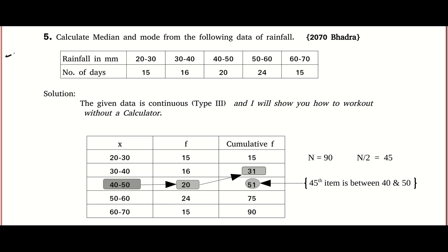The next thing is Type 3. In Type 3, you will be given class intervals — it is called continuous data. The word 'continuous' comes because the first and second intervals are connected by the same number, and so on. If the data is not continuous, you have to forcefully make it continuous by adding a correction factor. For Type 3, our index method will not work, so we use the method you learned in class 9 or 10.